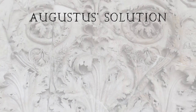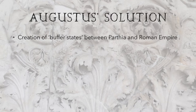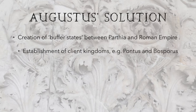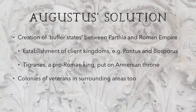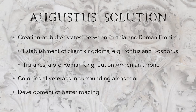In his solution, instead of invading Parthia, he controlled the Parthian Empire with so-called buffer states — areas between Parthia and the Roman Empire which owed Rome allegiance, forming a kind of boundary or border between the two. Client kingdoms like Pontus and Bosporus were established, loyal to Rome but managing their own administration, giving Rome the benefits of provinces while saving money and manpower. A pro-Roman king, Tigranes, was installed on the throne in Armenia, and colonies of veterans were set up in surrounding areas with developed roads to deploy troops quickly if needed.